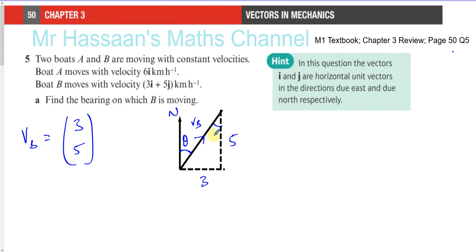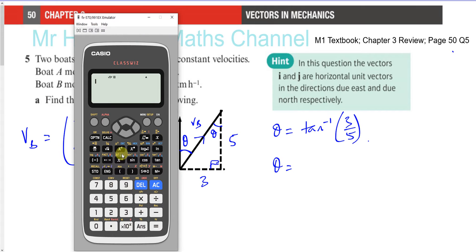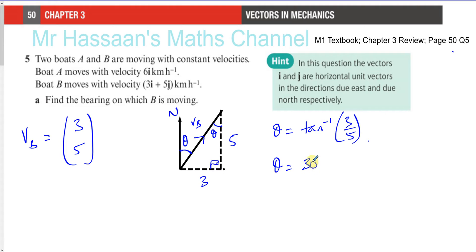Now we can see that this angle and this angle are going to be the same — vertical parallel lines. So if we find this angle, that will be the bearing we need. We have opposite and adjacent, so we use tangent. The angle theta is going to be inverse tan of opposite over adjacent, so inverse tan of three-fifths, which gives us 30.96 degrees.